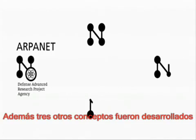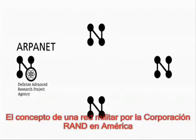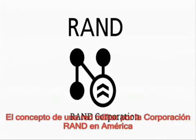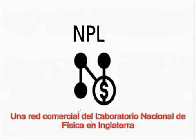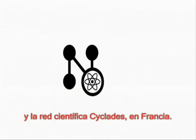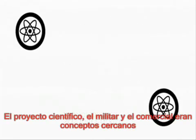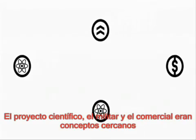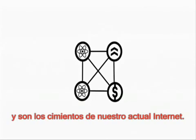Furthermore, three other concepts were to be developed which are fundamentally important for the history of the Internet: the concept of a military network by the RAND Corporation in America, the commercial network of the National Physical Laboratory in England, and the scientific network Cyclades in France. The scientific, military, and commercial approaches of these concepts are the foundations for our modern Internet.